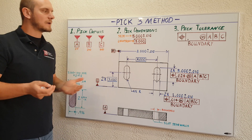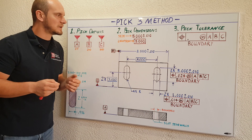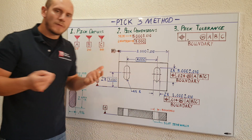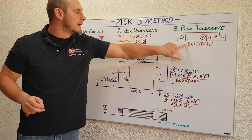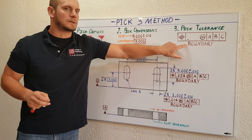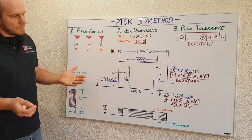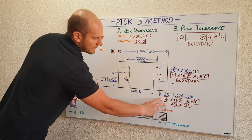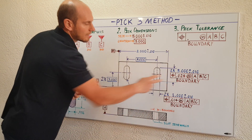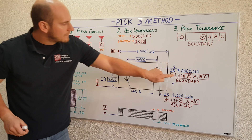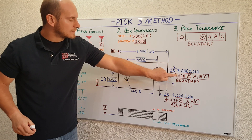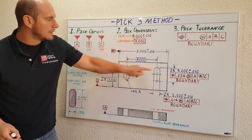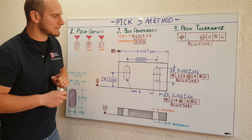Number three: you're going to pick your tolerance. For slotted features like this, you want to use a positional tolerance, which I indicate using this symbol here. You also want to use this boundary term and place it directly underneath your GD&T symbol. I've already placed the two GD&T symbols you'll need — one underneath the width and one underneath the height of your slotted feature. You'll notice I've given the overall height more positional tolerance than the overall width, simply because you get more reliable error in the overall height of the slot than you do the width.